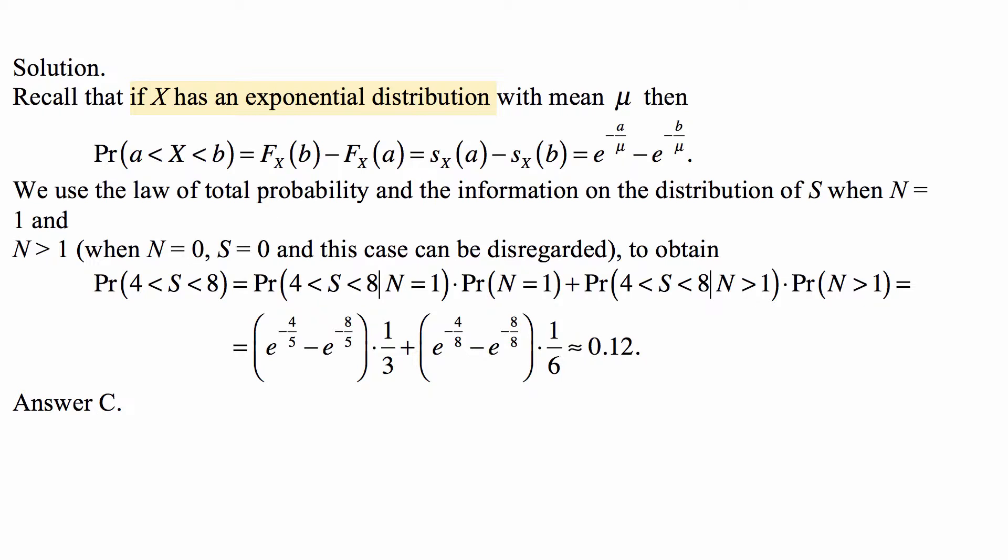We use the law of total probability and the information on the distribution of S when N equals 1 and N greater than 1. When N equals 0, S is 0, in this case can be disregarded. And we obtain this.